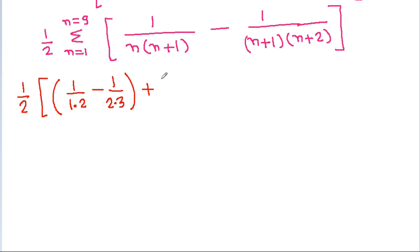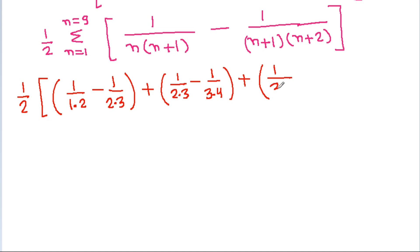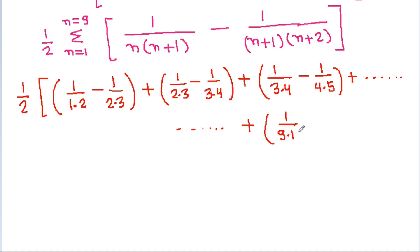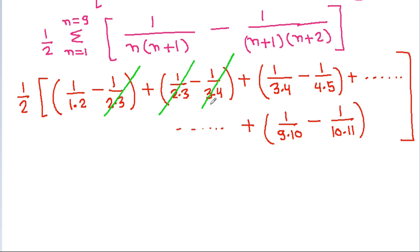If we put n equal to 2, then this will be 1/(2×3) minus 1/(3×4). If we put n equal to 3, then it will be 1/(3×4) minus 1/(4×5). The 1/(2×3) terms cancel, and the 1/(3×4) terms cancel.